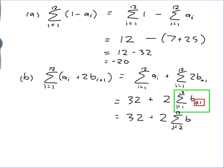Now I can use, I'll use a different letter just to highlight the fact that I have actually changed something there, but the letter doesn't matter. I could have kept it as an i. And I know what the sum from 2 to 13 of b is. It's minus 4. So 32 plus 2 times minus 4, which would be 32 minus 8, which would be 24. And that's the end of the problem.